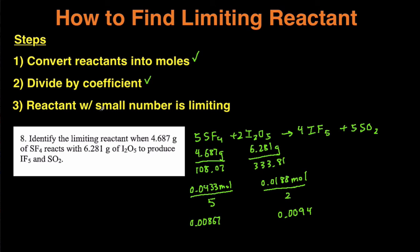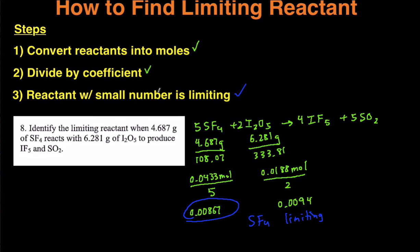And then step 3, the reactant with the smaller number is going to be limiting. So if we compare these two, this one is smaller, so that means SF4 is limiting. And that's it. You just follow these three steps and then you can find the limiting reactant. Pretty easy, and hopefully that helped.